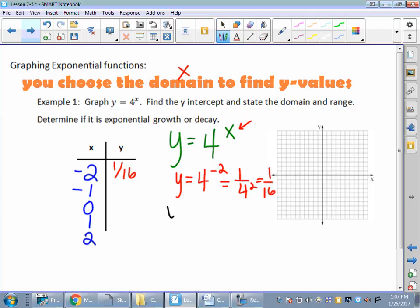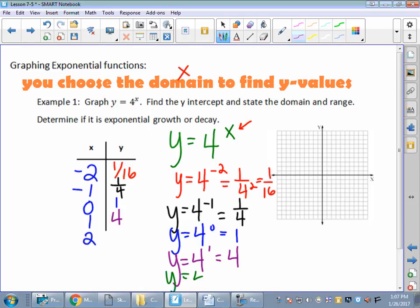I'm going to put a negative 1 in there. That's 1 over 4 to the 1st power, or 1 4th or 0.25 if you like a decimal better. I'm going to put a 0 in there. y equals 4 to the 0. Everybody remembers this, right? 4 to the 0 power, anything to the 0 power equals? I'm going to put a 1 in there. y equals 4 to the 1 power. Well, that's simple. That's just a 4. And last but not least, let's put a 2 in there. y equals 4 to the 2nd power, 4 squared is 16.